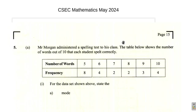We're looking at question 5 of the May 2024 CSEP Mathematics paper. In question 5A, Mr. Morgan administered a spelling test to his class. The table below shows the number of words out of 10 that each student spelled correctly. From the data set shown above, state the mode.